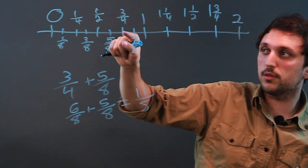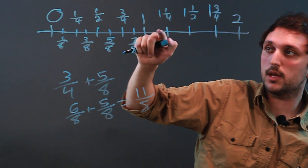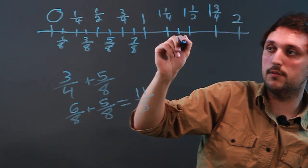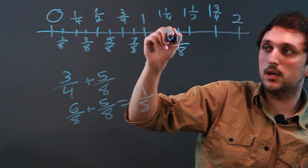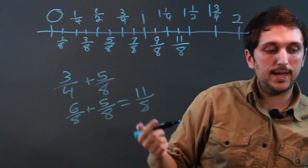And the way we do that is we say, well, let's go to six fourths, or rather six eighths, and go five more eighths. So, one, two, three, four, five. And this is going to be eleven eighths. As this would be ten eighths and this would be nine eighths. So, that would be how you add.